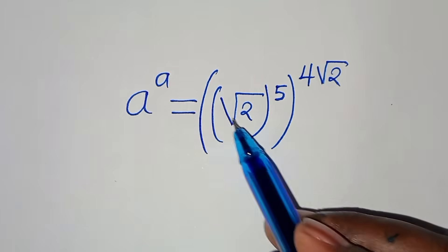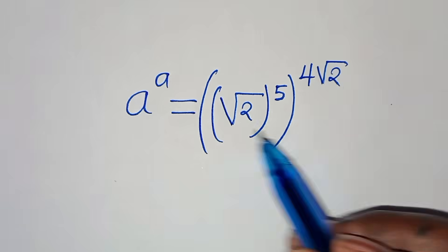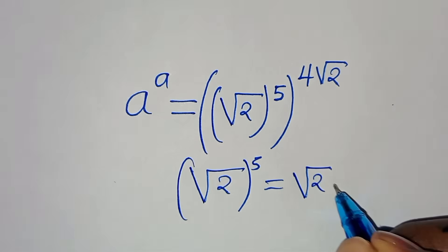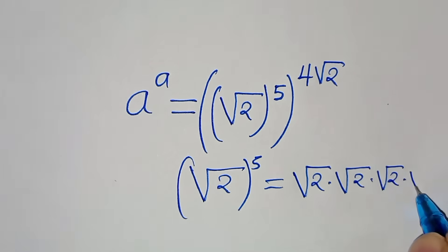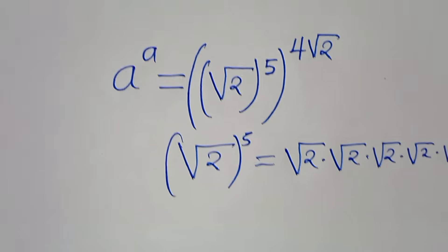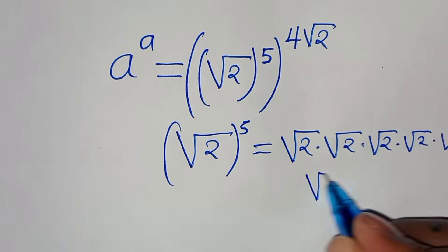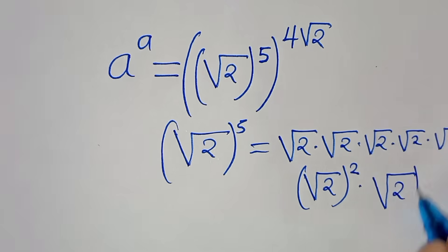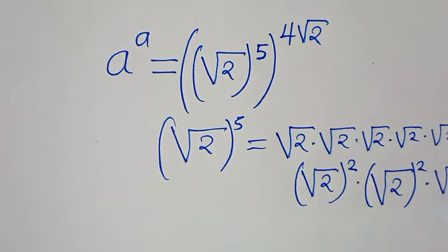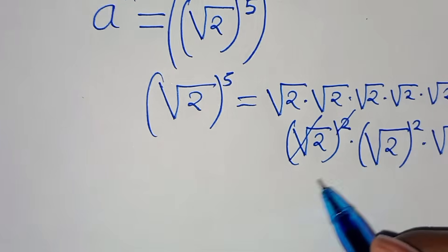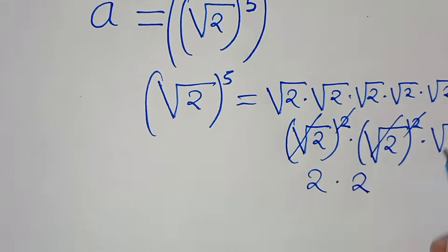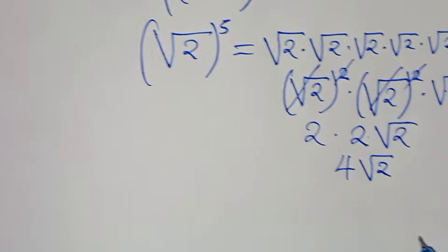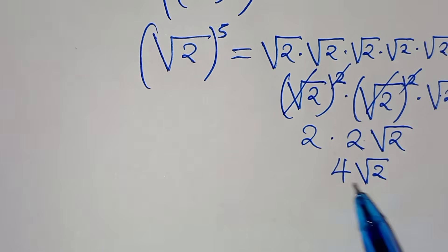Now we have a to the power of a equal to square root of 2 to the power of 5, raised to the power of 4 square root of 2. Let's compute square root of 2 to the power of 5: that is square root of 2 times square root of 2 times square root of 2 times square root of 2 times square root of 2. Pairing them: square root of 2 squared is 2, and another square root of 2 squared is 2, leaving one square root of 2. So this equals 2 times 2 times square root of 2, which is 4 square root of 2.